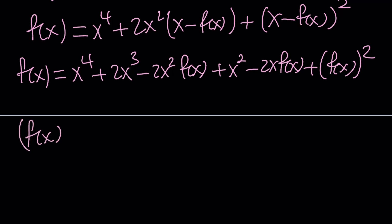f of x squared, and then from that I'm just going to subtract all the f of x's. Let me go ahead and show you here. Minus 2x squared f of x, and then minus 2x f of x, and then this one will be subtracted, so that's going to be minus f of x.